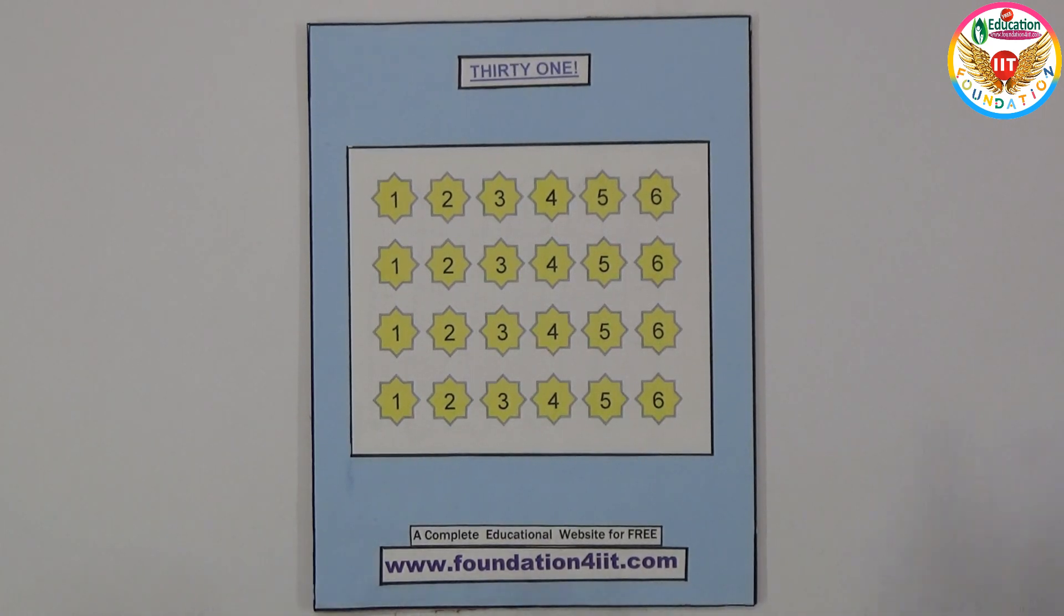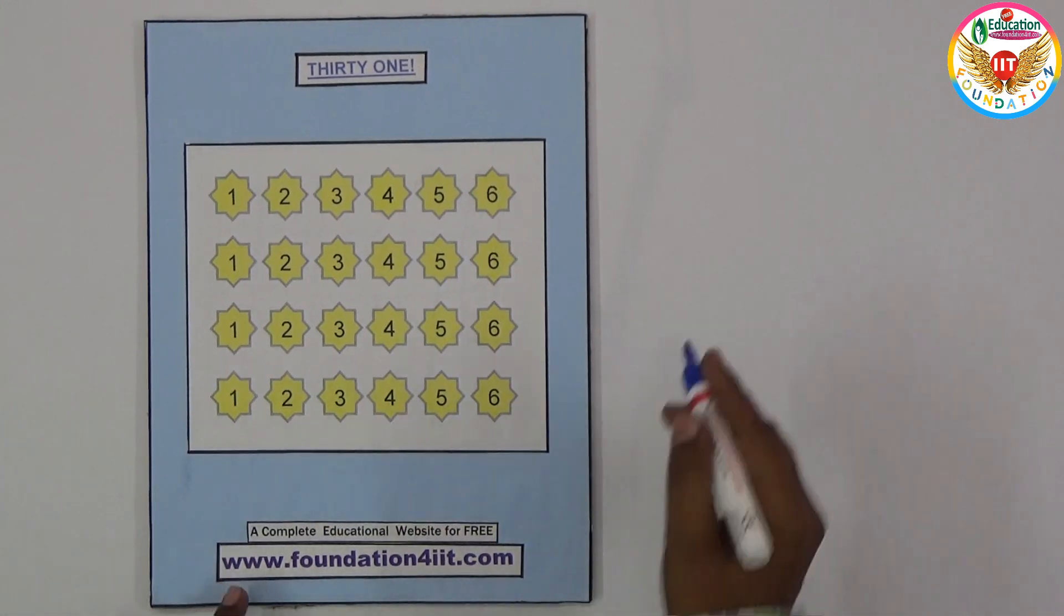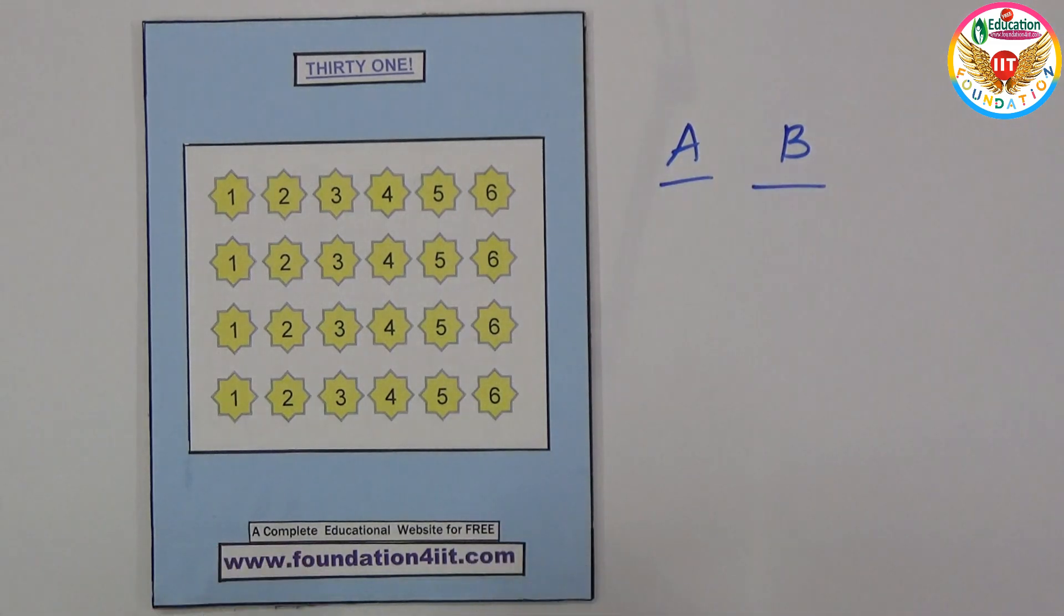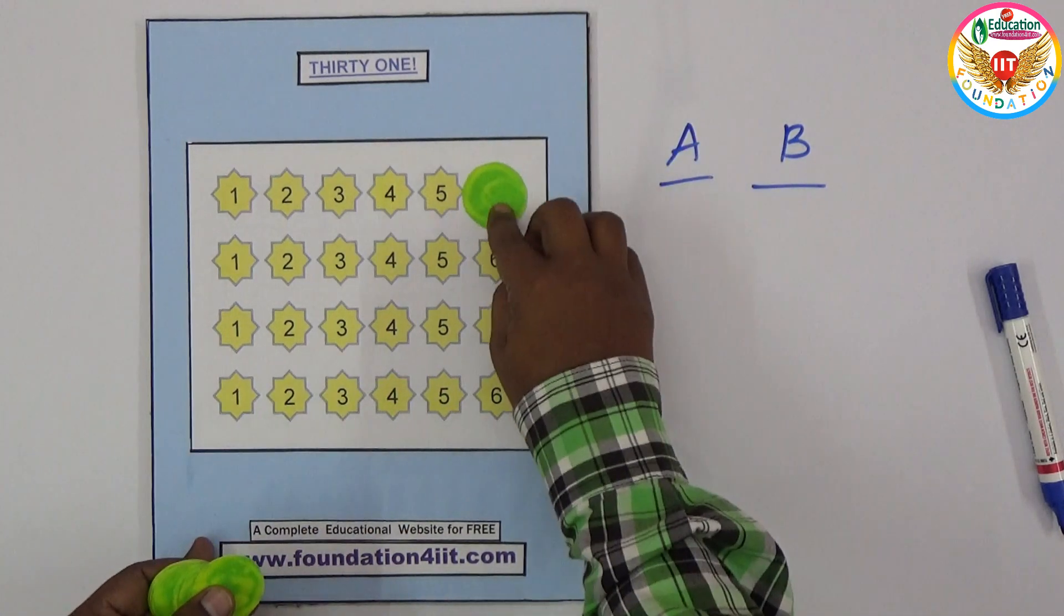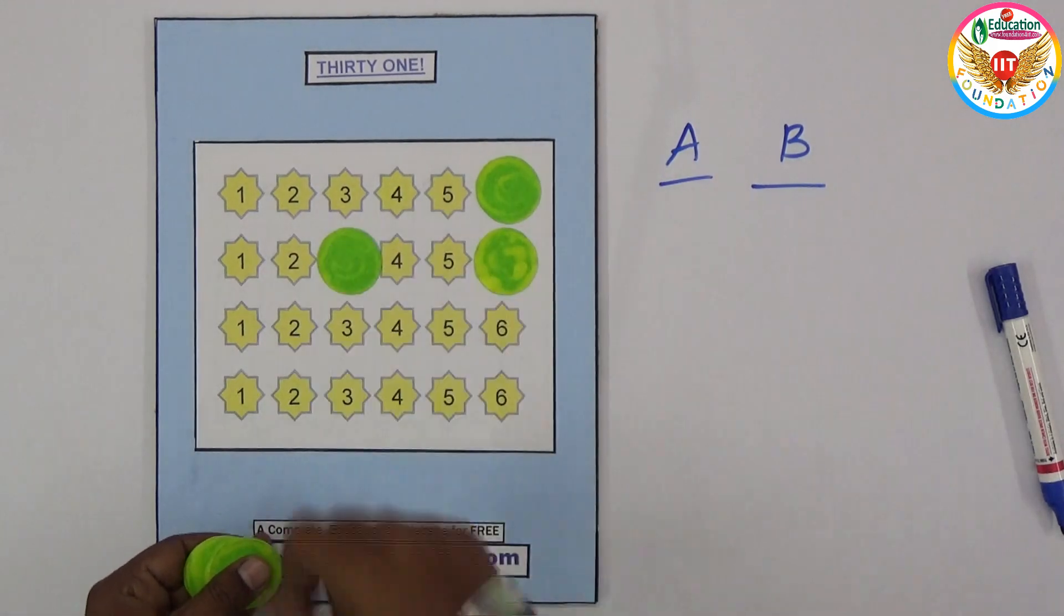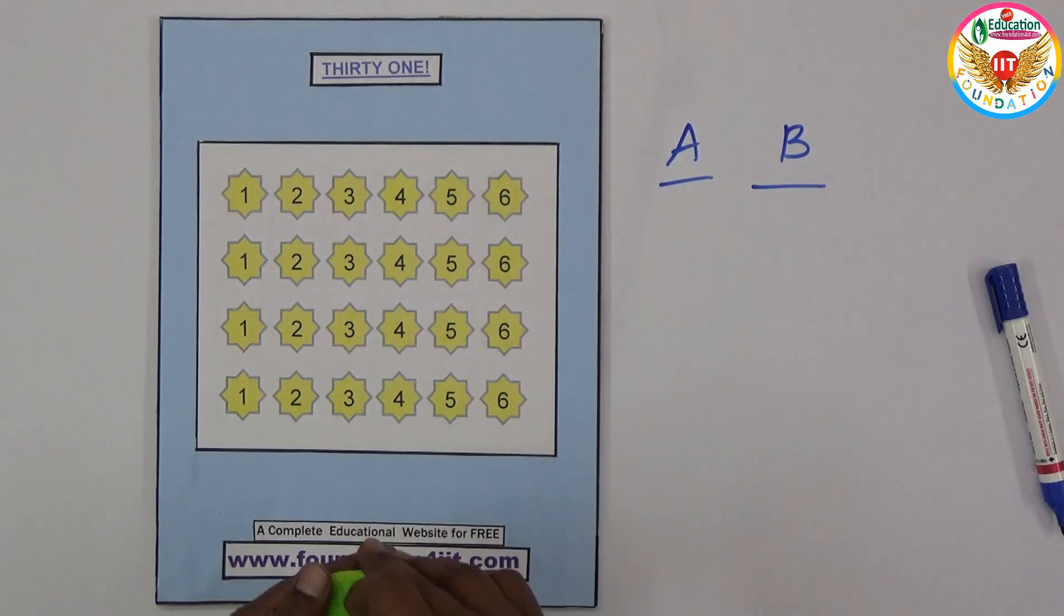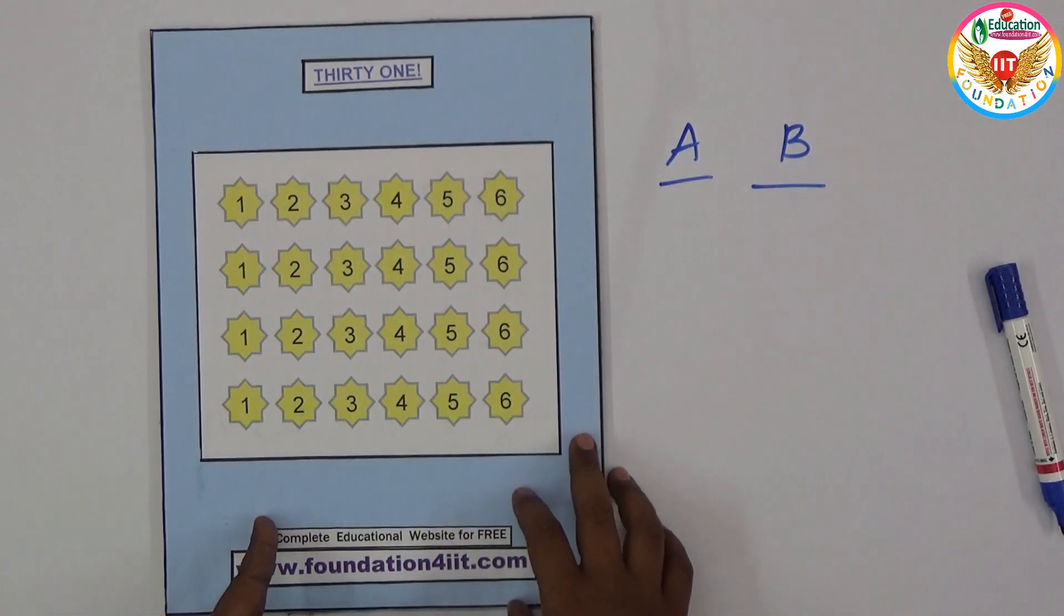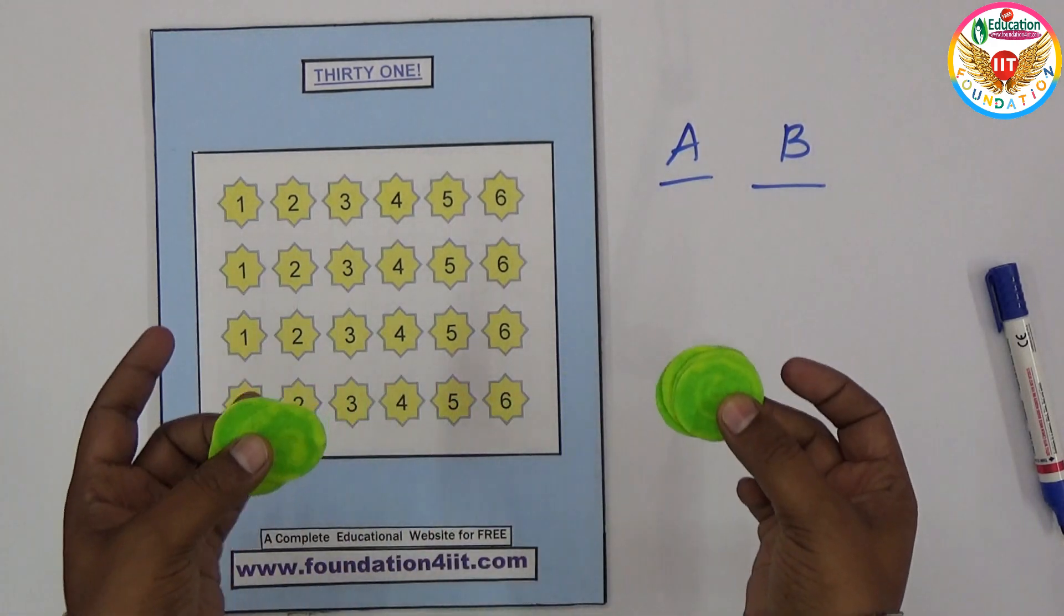This game can be played with two players, let's say A and B. Using some circular cards, you can keep them to close the numbers. The concept behind this is that two players should play at the same time and whoever makes the total 31 is the winner. These cards A and B should have in both their hands.